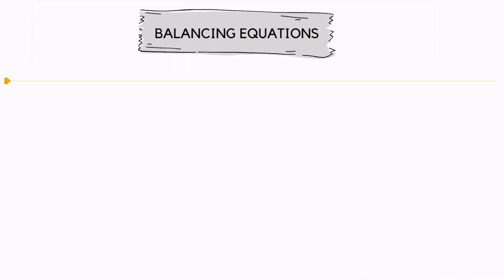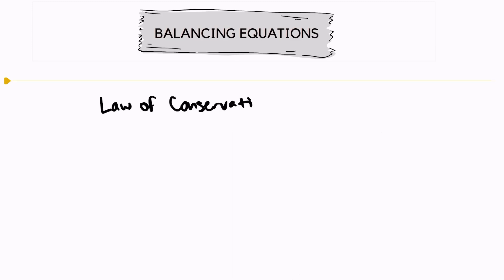Welcome back. We're going to take a look at balancing equations. In chemistry, the only reason that we balance equations is because of the law of conservation of mass, which tells us that matter cannot be created or destroyed.